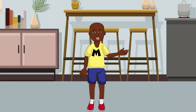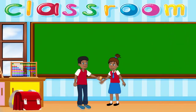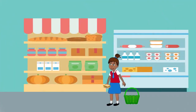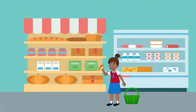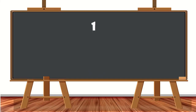Fractions can be seen everywhere in our daily lives — when we share things with our friends, when we buy things at the store, and so on. When we write fractions, we do so with one number on top and another number at the bottom, with both numbers separated by a little line at the middle.